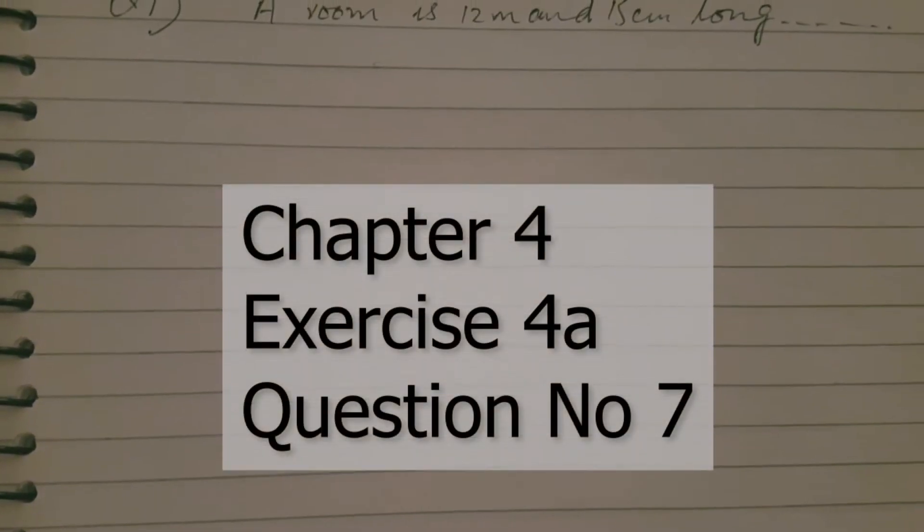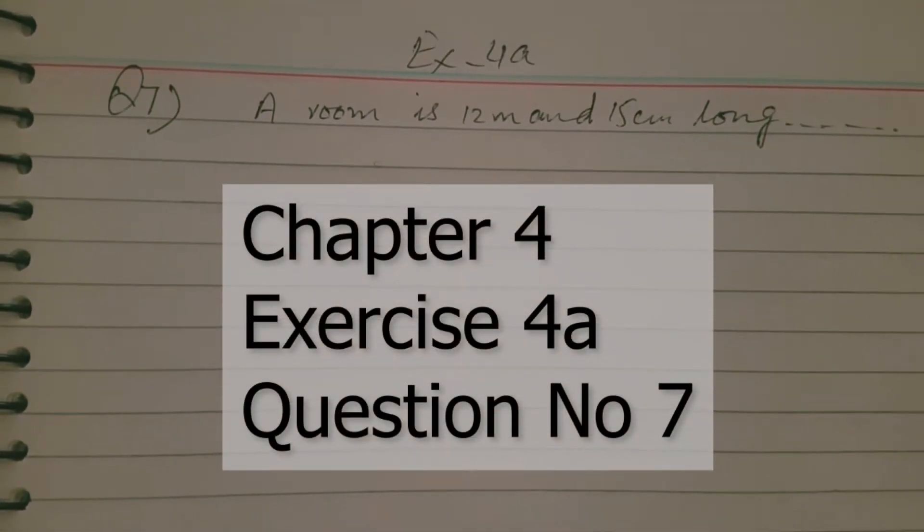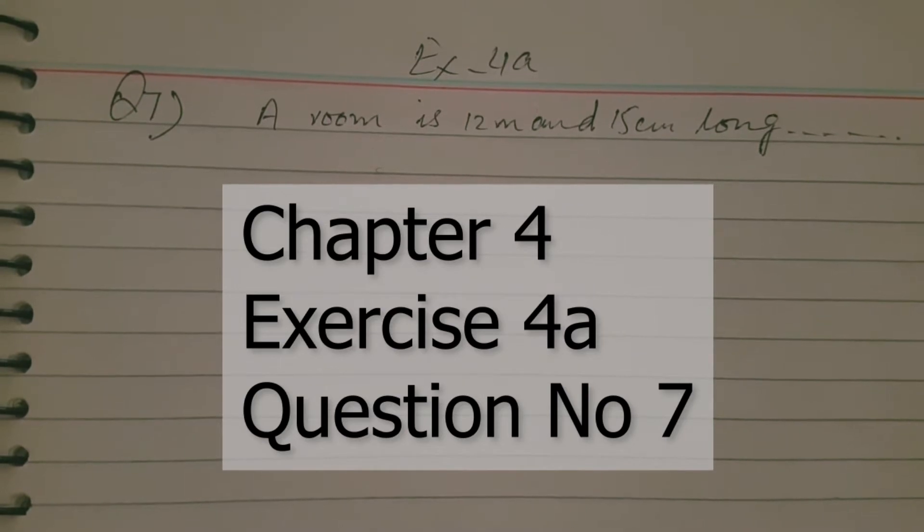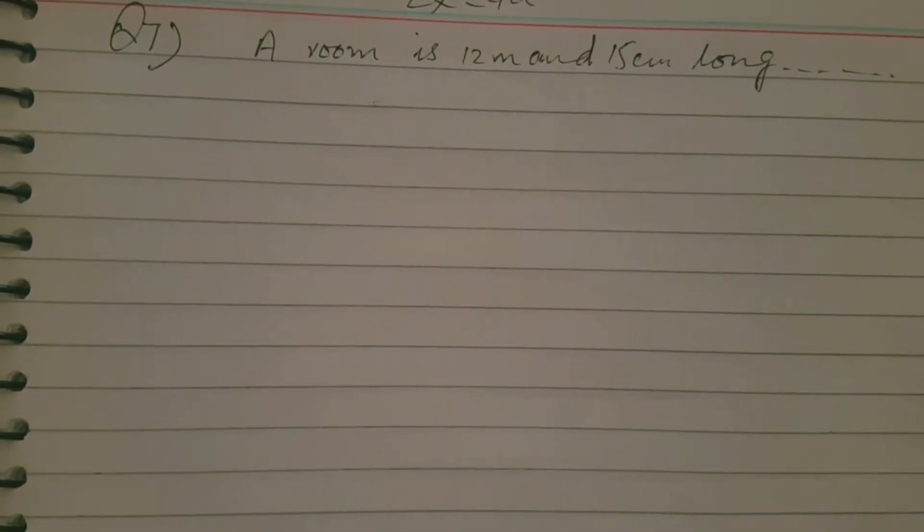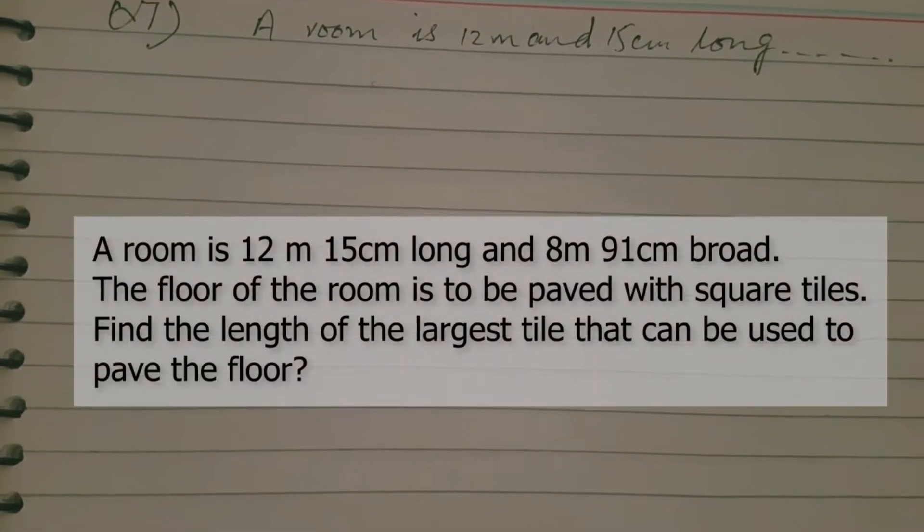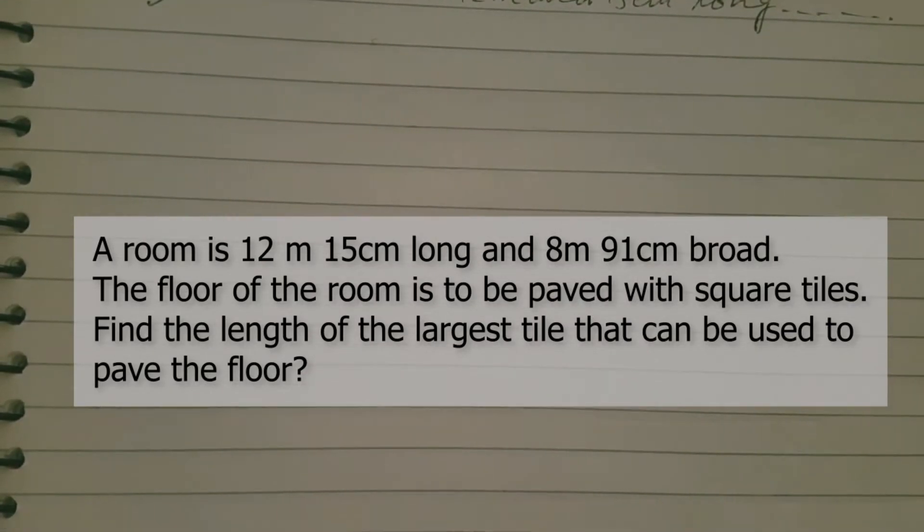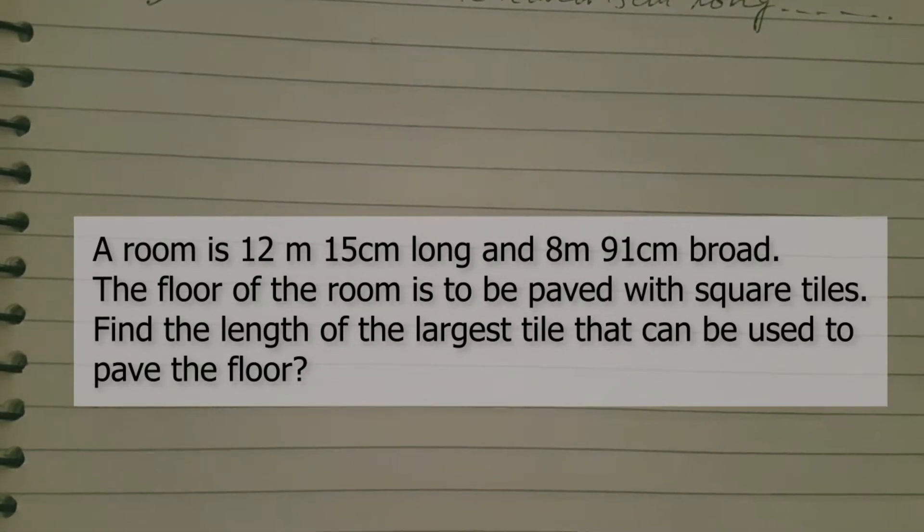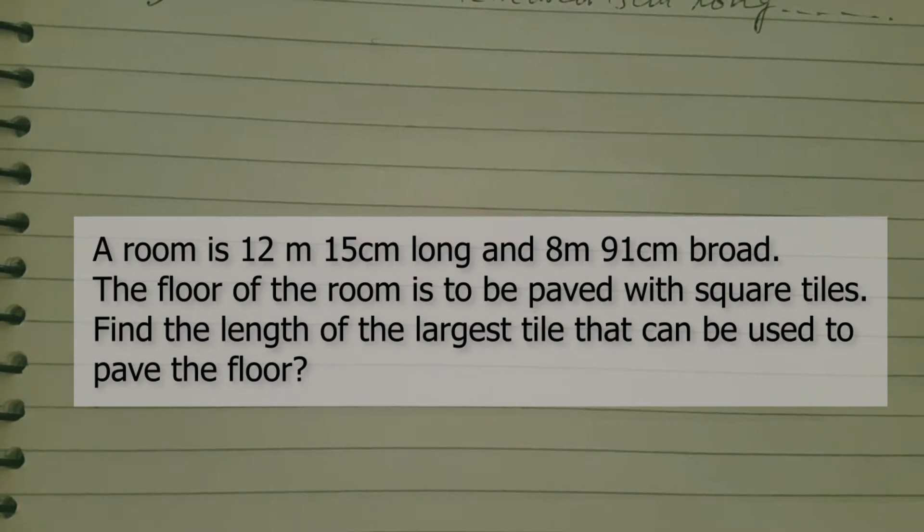Okay children, next question. Problem from exercise 4A is question number 7. A room is 12 meter and 15 centimeter long and 8 meter 91 centimeter broad. The floor of the room is to be paved with square tiles.